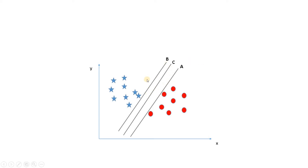Now coming to this example: when you have three lines where all are perfectly segregating two classes, which one should you select? Obviously line C, because you should select such that the margin becomes maximum — that is, the distance between the nearest data point of each class should be maximum. For line C, the distance between the nearest star class point and the nearest red class point is huge compared to both A and B. So we choose C as the optimal plane dividing these two classes.